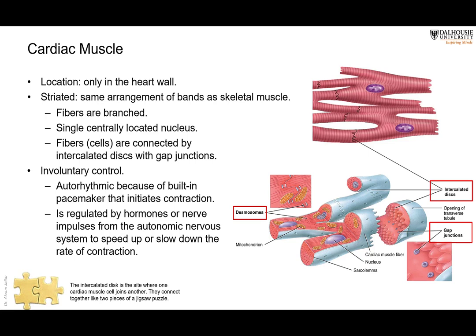The second type is the cardiac muscle. Its location is in the heart. Please don't confuse cardiac muscle with smooth muscles, which are present in the walls of blood vessels. Cardiac muscles are located in the heart. Again, they are striated like the skeletal muscle, with alternating dark and light bands. But they have a centrally located single nucleus. They are branched, and the muscle fibers are connected with each other by intercalated disks, which are sites of junctional complexes, including gap junctions.